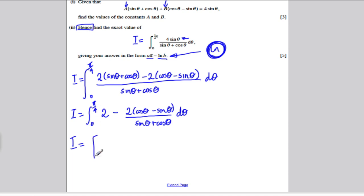So, if I integrate 2, I get 2 theta, because I'm integrating with respect to theta. And if I integrate this, I get 2, I get minus 2 ln of the denominator. So, ln of sine theta plus cos theta. And all of that is evaluated between 0 and pi by 4.